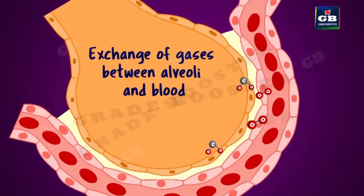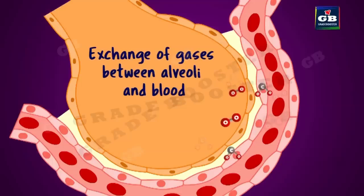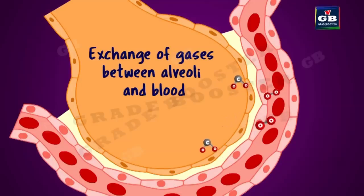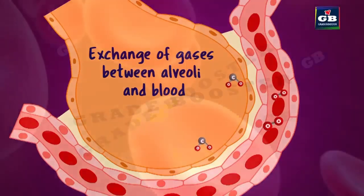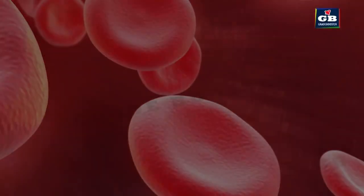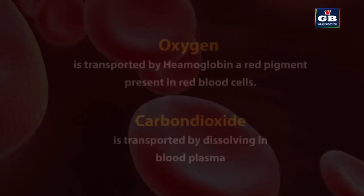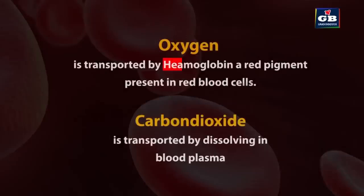The blood that comes from the body parts has more carbon dioxide in it, while the air that enters the alveoli has more oxygen. Due to this difference, the exchange of gases takes place. Oxygen is transported by a pigment called hemoglobin present in the RBCs of blood. Carbon dioxide is transported by blood in a dissolved form.